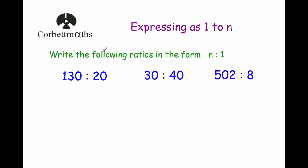Now we'll do questions where the ratio is written in the format n to 1 — meaning the second number becomes 1. First: 130 to 20. We divide both numbers by 20. 130 divided by 20 is 6.5, and 20 divided by 20 is 1. So 130 to 20, written in the format n to 1, is 6.5 to 1.